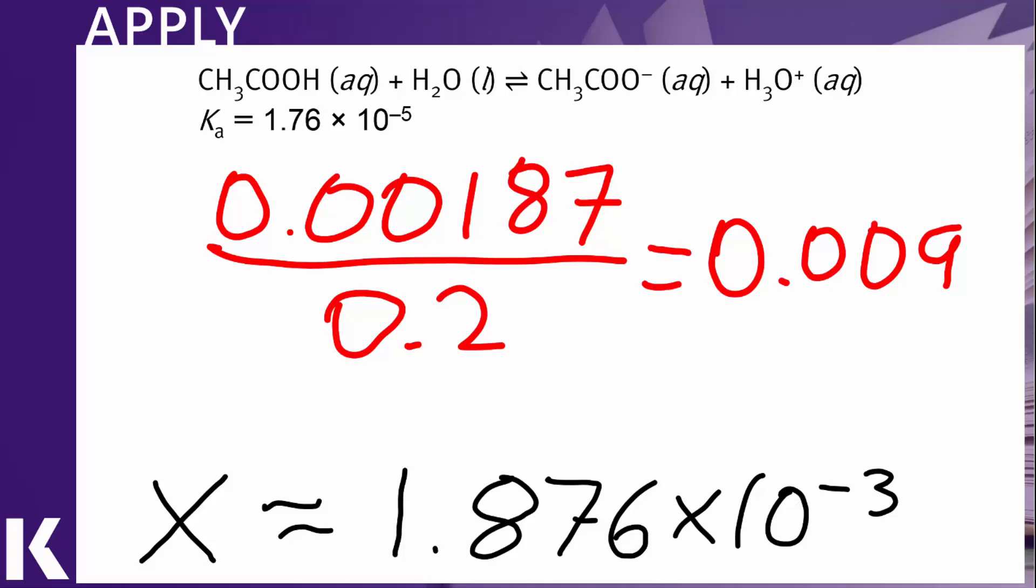In fact, if we had carried out the quadratic calculation, we would have received a value, an answer for X, of 1.875 times 10 to the minus three. So our difference would have been in the third decimal place. So hardly matters at all in terms of the precision that we're working in here. And again, this comparing to the original concentration and seeing if it is less than 5% of that initial concentration bears out the fact that we are safe in making this assumption here.